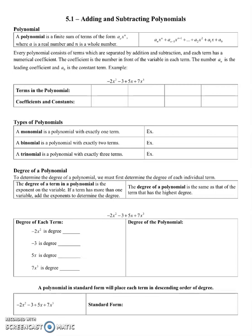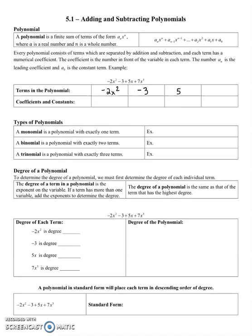For example, if we have negative 2x squared minus 3 plus 5x plus 7x cubed, remember the terms are things separated by addition and subtraction, and if it's a subtraction, it goes with the term because the term is negative. So the terms in the polynomial are negative 2x squared, negative 3, 5x, and 7x cubed.